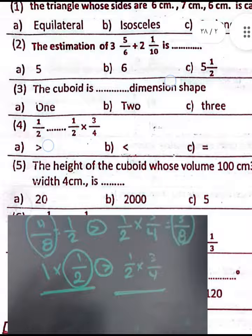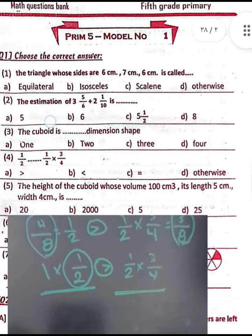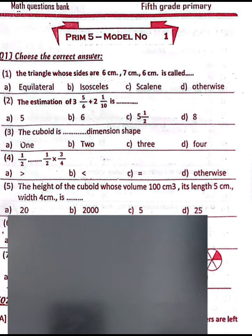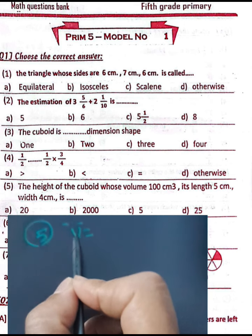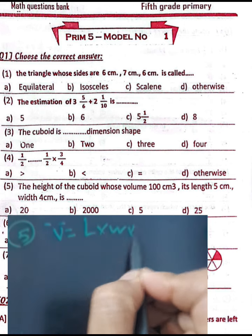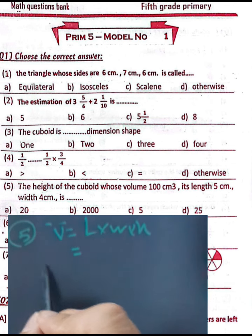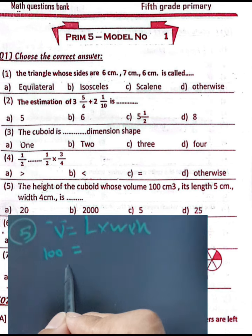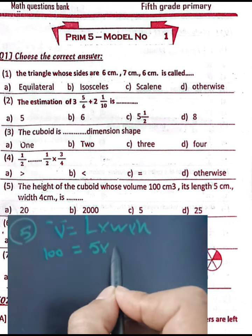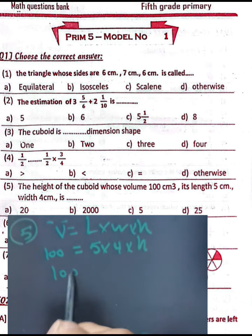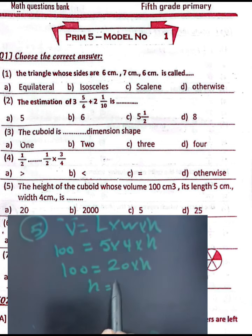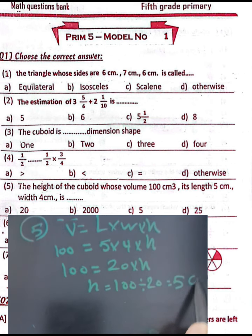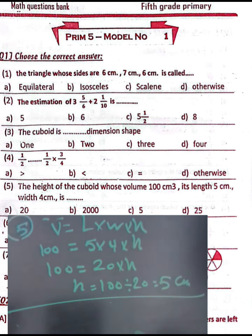Question number five: find the height of a cuboid whose volume is 100 cubic centimeters, length is 5 cm, and width is 4 cm. The volume of a cuboid equals length times width times height. So 100 equals 5 times 4 times height, which is 20 times height. Therefore, height equals 100 divided by 20, which equals 5 centimeters.